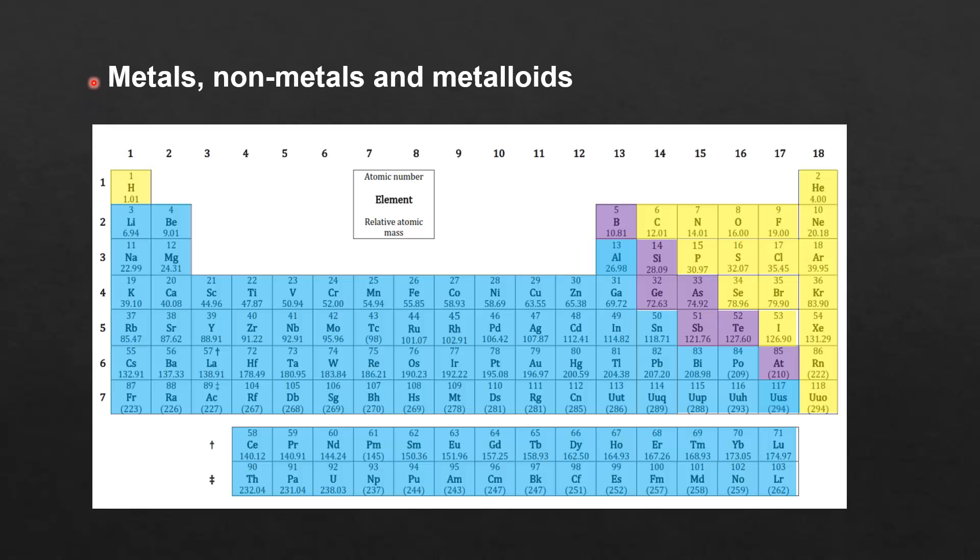And finally, we'll have a look at where the metals, the nonmetals, and the metalloids are on the periodic table. So the elements shaded in light blue, they are all metals, and they are located on the left of the periodic table.